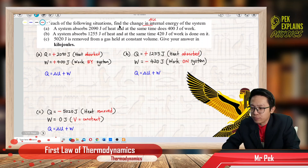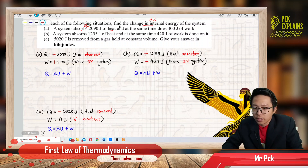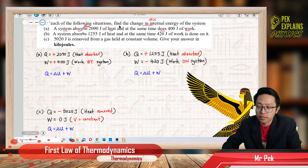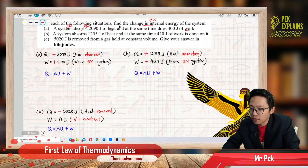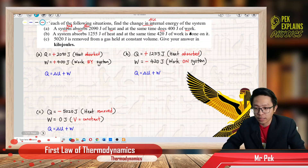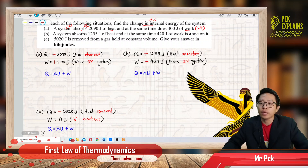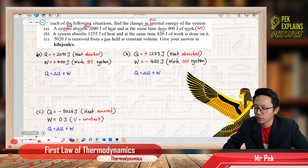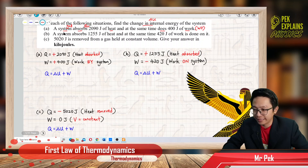He said the system absorbed heat. Heat absorbed means positive Q. And then, the system does the work — the system is the gas. So the gas does some work, which means work done is positive. Q is positive because heat is absorbed, and work done is positive because the gas does work, or work done by the system.